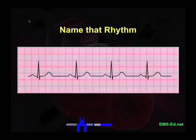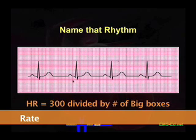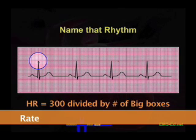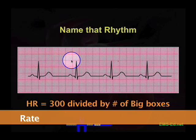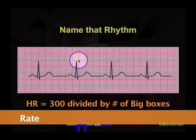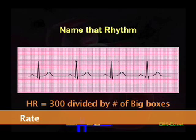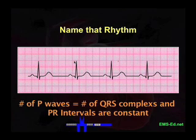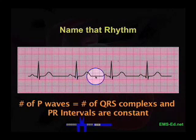Let's figure the rate. We'll find an R wave that's close to a dark line. Counting the big boxes: one, two, three, four, five — so five into 300 is 60. This is slower than 60, which would be 50. So between 50 and 60, let's call it a heart rate of about 54. It's sinus because there are P waves driving the beat and the rate is less than 60. P wave, QRS, P wave, QRS — the P waves are clearly driving the QRS complex.